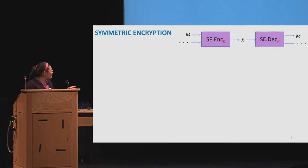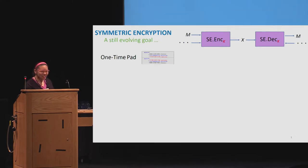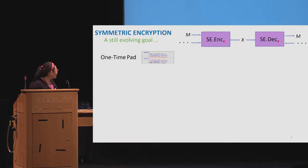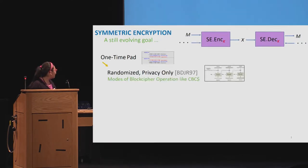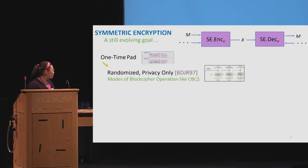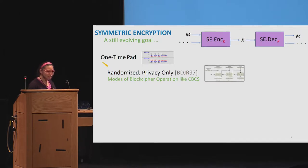Let's step through a bit of the evolution of how symmetric encryption has worked over the years. It's a crypto talk, so I need to start with the one-time pad. We eventually moved on to randomized notions of symmetric encryption, and our security goals moved forward to privacy in CPA-style security goals. This was usually accompanied with schemes that were modes of operation — block cipher things like CBC.